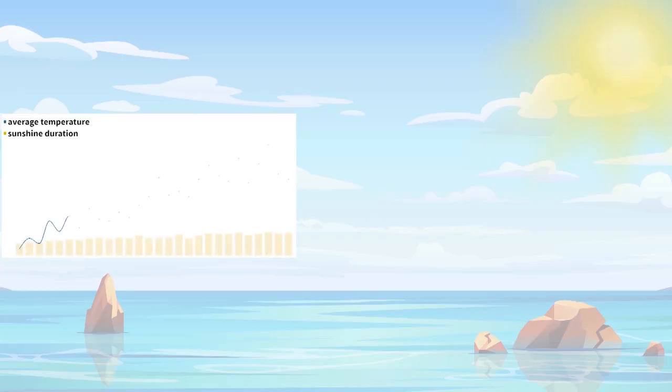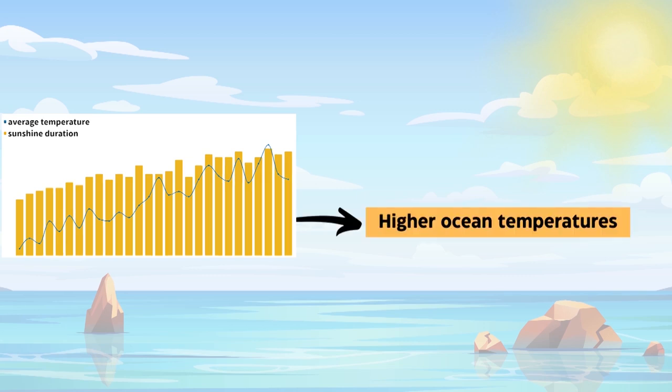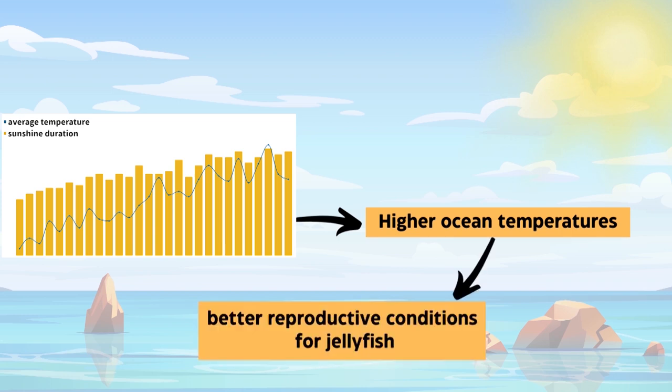Another reason for the overpopulation is a result of climate change. Higher ocean temperatures mean that reproductive conditions that formerly occurred only every few decades now occur more frequently.